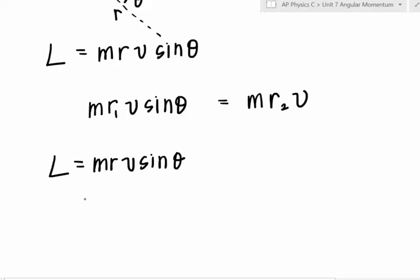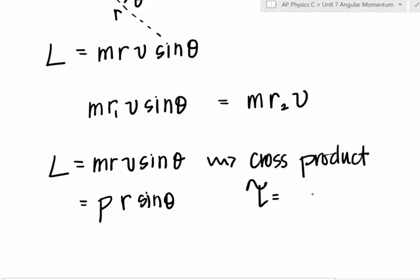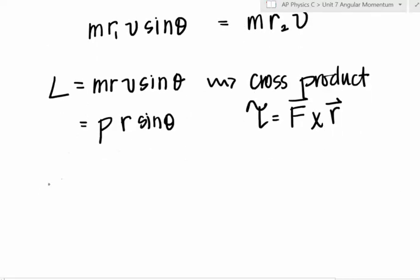Wait, what's M times V? Linear momentum, so P times R sine theta. Sine theta makes me think of a cross product. Remember torque was force cross with R? So our velocity crossed with R. So it winds up being M V cross R is our angular momentum. This is probably the one you'll use most often.